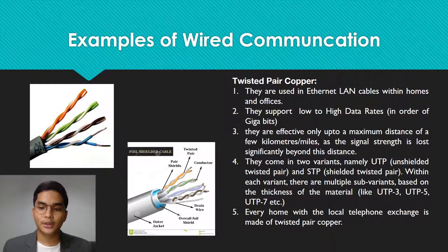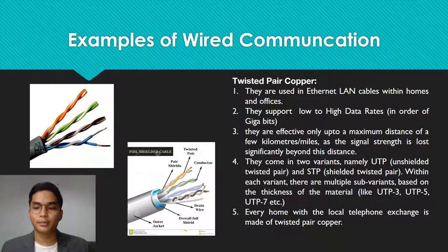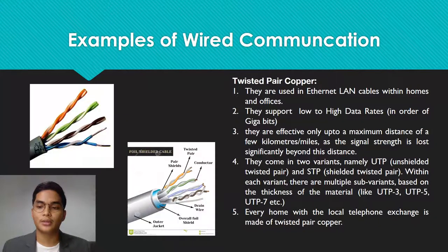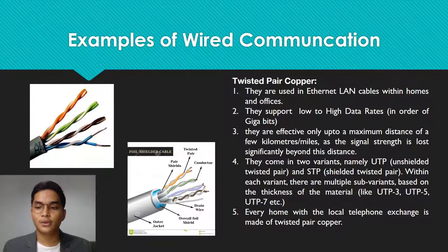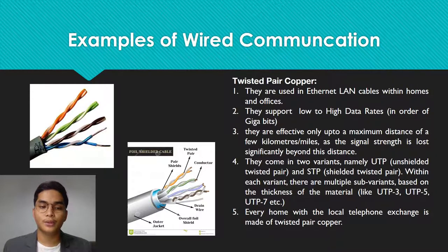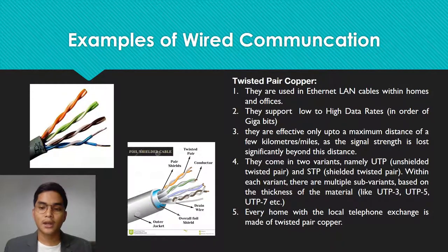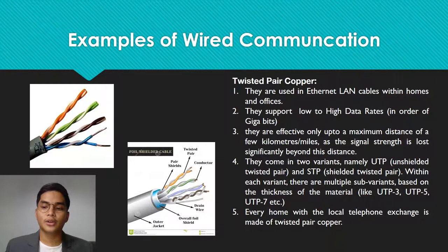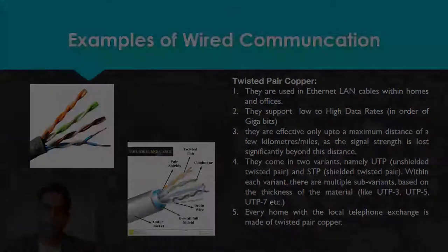Within each variant there are multiple sub-variants based on the thickness of the material, like UTP3, UTP5, UTP7, etc. And lastly, every home connection to the local telephone exchange is made of twisted pair copper.